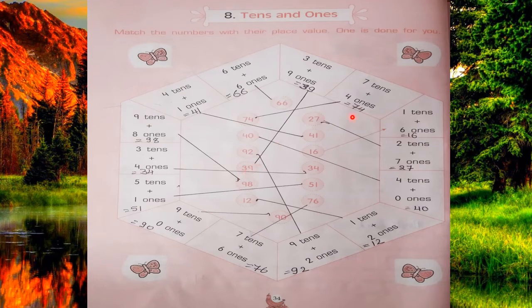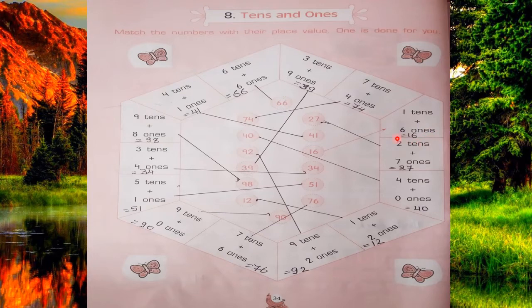Next is 7 tens and 4 ones. 7 tens means 70 and 4 ones means 4, so 70 plus 4 is equal to 74. We will match with 74. You have to add them and then match with the correct number. Next is 1 ten and 6 ones: 10 plus 6 is equal to 16, so you will match with 16.